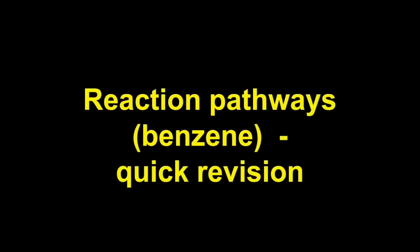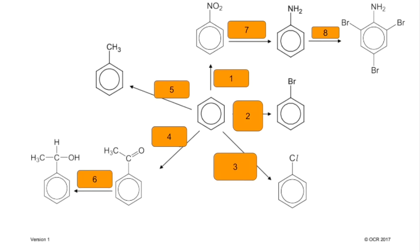Quick revision video on the reaction pathways for benzene. I'm going to reveal what's behind those eight boxes in order, giving the reagents and conditions for those conversions. Pause if you want to have a go yourself. Number one: benzene to nitrobenzene — you react the benzene with concentrated nitric acid and concentrated sulfuric acid, and it needs to be carried out between 50 and 55 degrees C.